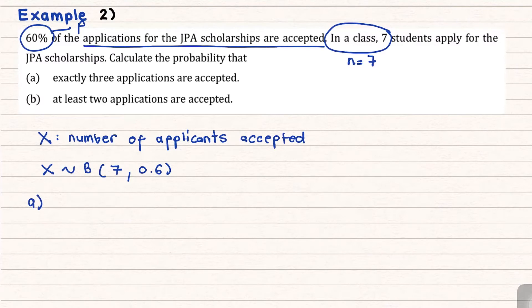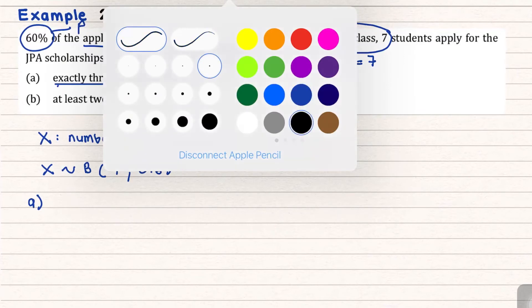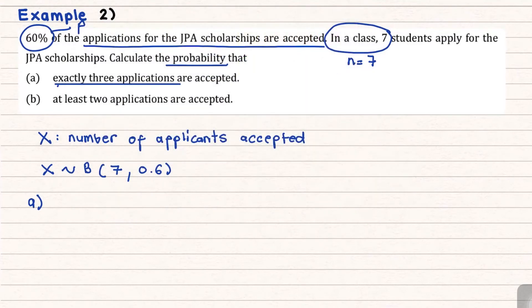So part A says calculate the probability exactly 3 applicants are accepted. So if it is exactly, then what you can do is change into a notation sentence, which is probability of 3 applicants accepted, means that your X number of applicants accepted equivalent to 3.